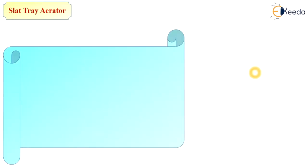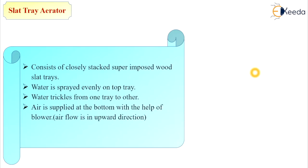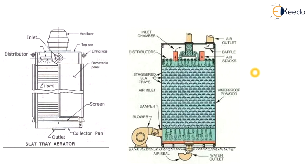The next type is the slat tray aerator. It consists of closely stacked, superimposed wood slat trays and water is sprayed evenly on the top tray, then trickles from one tray to another. There are a number of trays layered one upon another, and air is supplied at the bottom with the help of blowers. Air flows in an upward direction while a ventilator discharges air and gases. Water trickles downward through the trays and the transfer mechanism takes place.